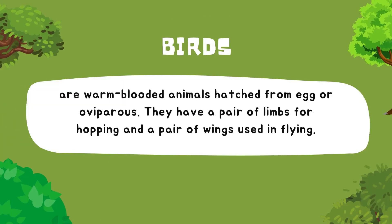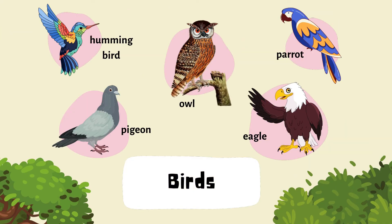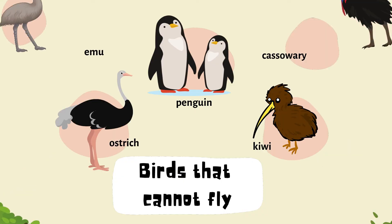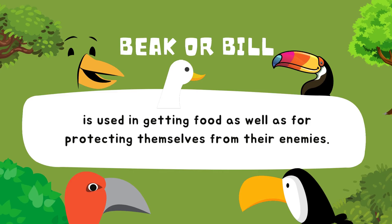Now, let us move on to birds. Birds are warm-blooded animals hatched from egg, or oviparous. They have a pair of limbs for hopping and a pair of wings used in flying. Some examples of birds are hummingbird, pigeon, owl, parrot, and eagle. Most birds can fly, but there are also birds that cannot fly, such as emu, ostrich, penguin, cassowary, and kiwi. Birds have a beak or bill, used in getting food as well as for protecting themselves from their enemies.